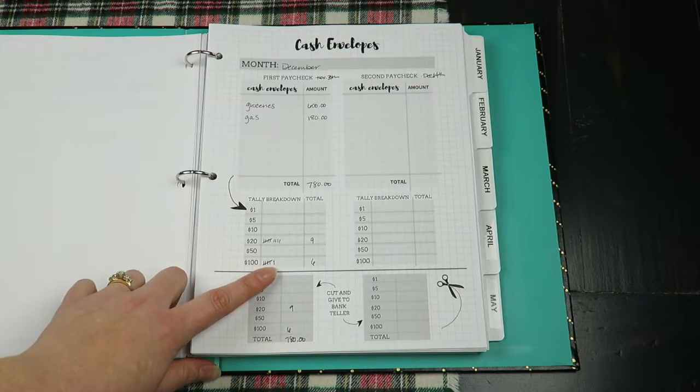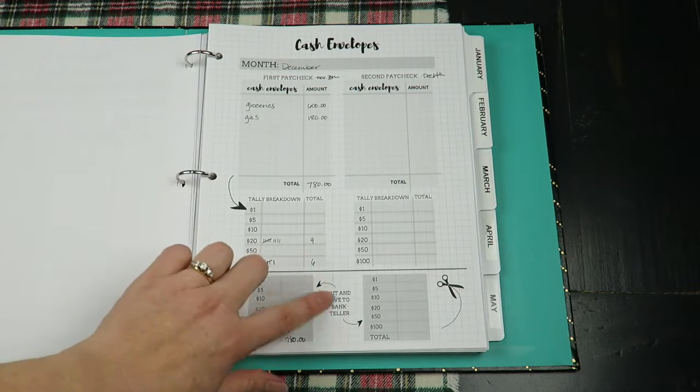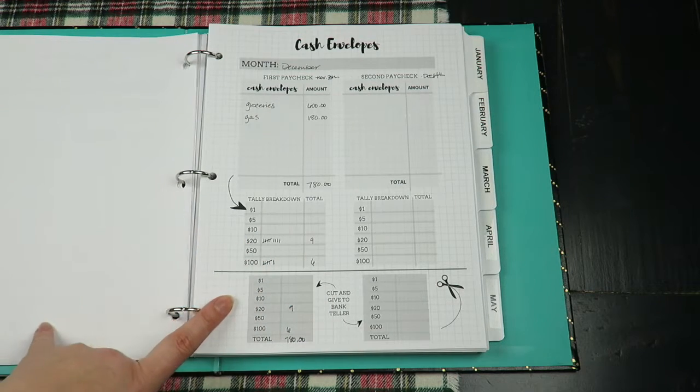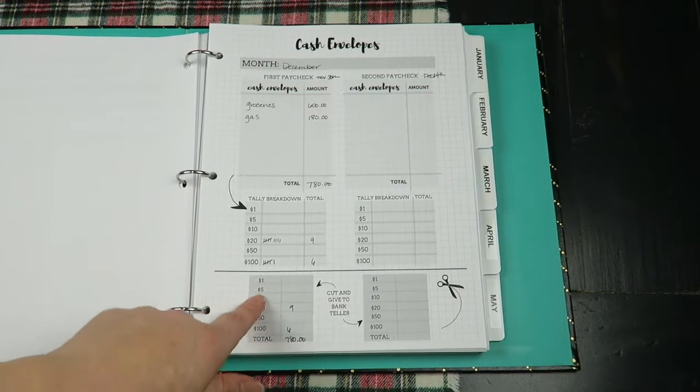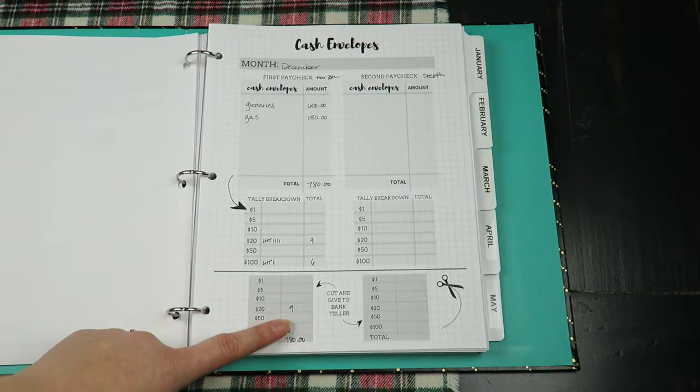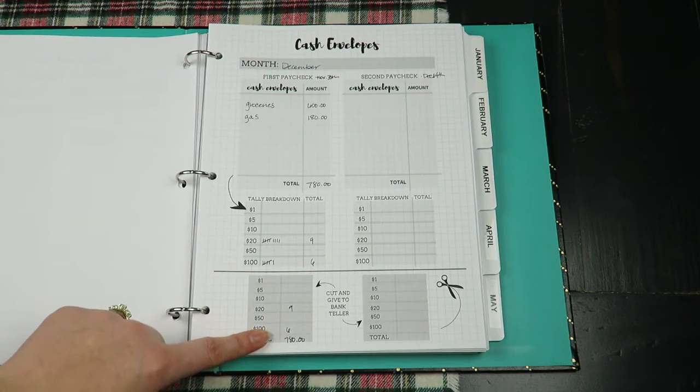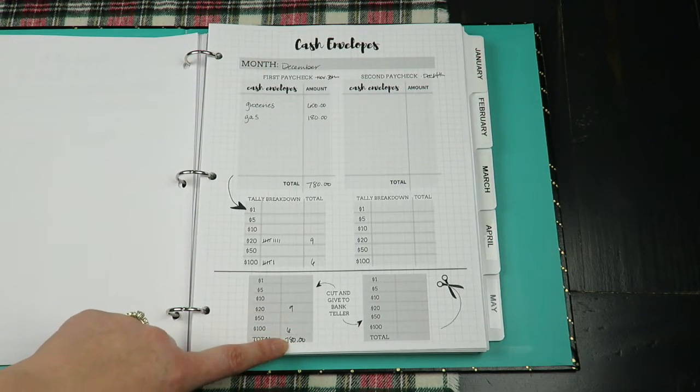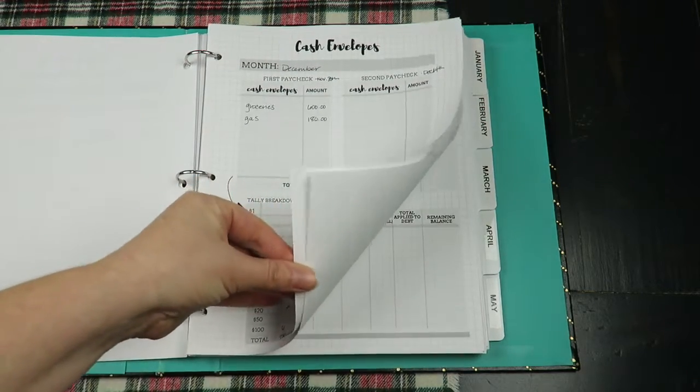Then for groceries we just need $600, six hundred-dollar bills, so six there, and then we transfer it down here and this is what we cut out and actually give to the bank teller. So it makes life so much simpler. You want to hand this to her and it would show, hey I need nine twenties for my account, twenty bills, and I need six hundred-dollar bills for my account, for a total of $780. So it's just less confusing on everybody's part.